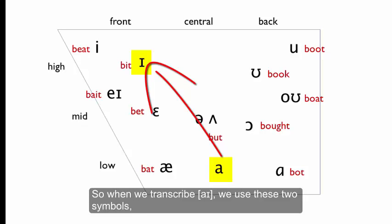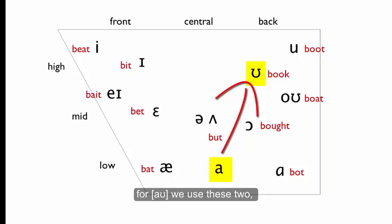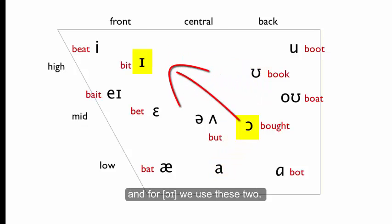Our use of vowel symbols that are not at the extremes of the vowel space represents this phonetic reality. So when we transcribe I, we use these two symbols. For ow, we use these two. And for oy, we use these two.